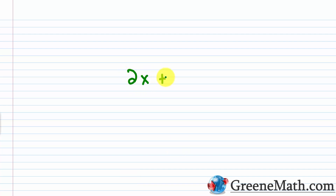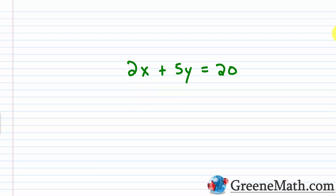So if we see something like 2x plus 5y equal to 20, I can't get this in terms of a variable equals just some number, because I have two variables involved. But I can still solve for one of the variables — I can choose to solve for x, or I can also choose to solve for y.